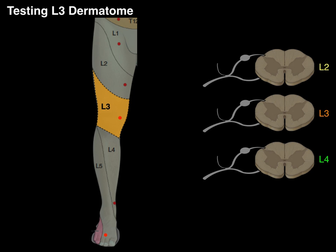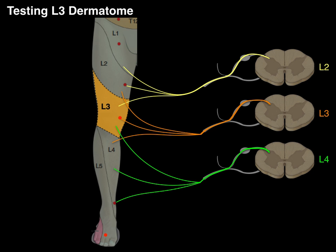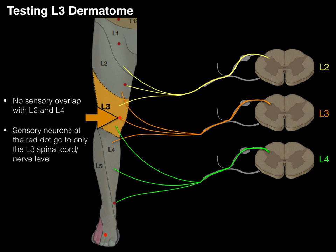Let's follow the sensory neurons from L3 — they all go back to that level. Between supra- and infra-adjacent dermatomes like L2 and L4, there's overlap. But the location of the red dot — the medial part of the knee — consistently shows that sensation goes to the L3 level of the spinal cord. So there is no sensory overlap with L2 and L4 at the location of the red dot; sensory neurons at the red dot only go to the L3 spinal cord level.